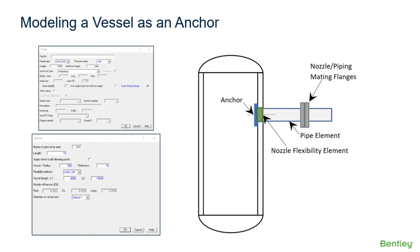The nozzle flexibility element makes it easy to estimate the shell flexibility using several methods. For cylindrical vessels, WRC-297 and Bijlard are the preferred methods. For cylindrical tanks with large diameters, the API-650 method is preferred. For reduced T-branches, the ASME Class 1 piping formula is appropriate. For nozzles on spherical or torispherical heads, the spherical method is most appropriate, which is based on Bijlard and is also part of the BS5500 British Piping Code. All of these methods are available in the nozzle dialog box.